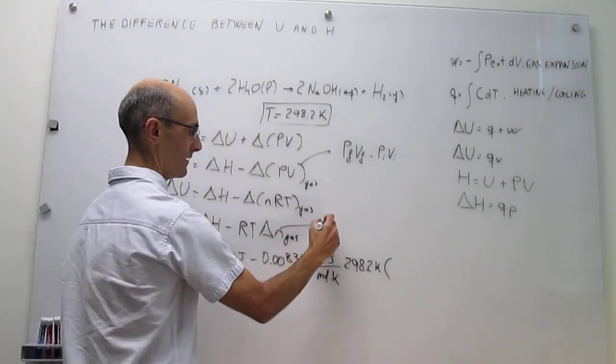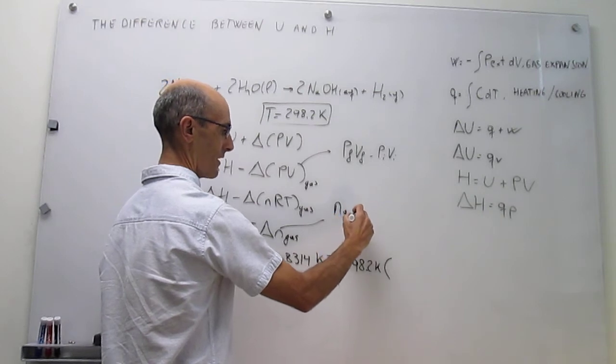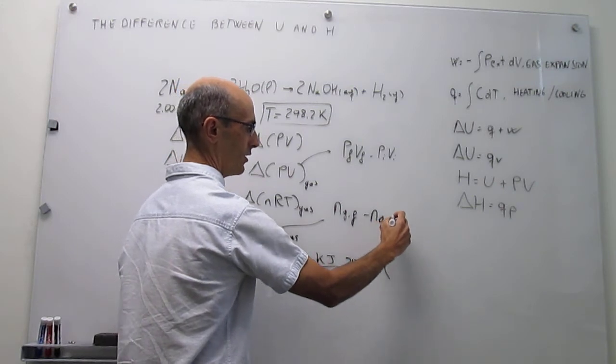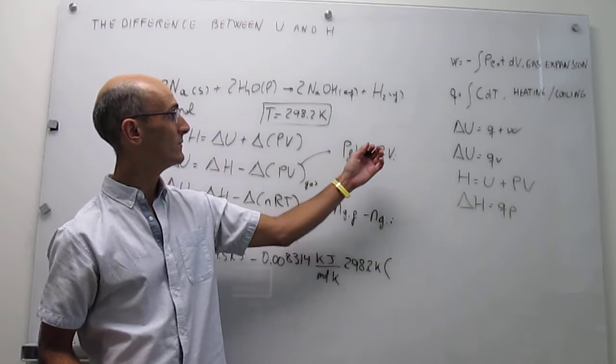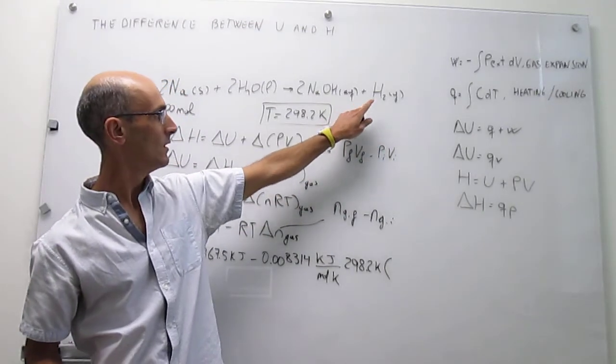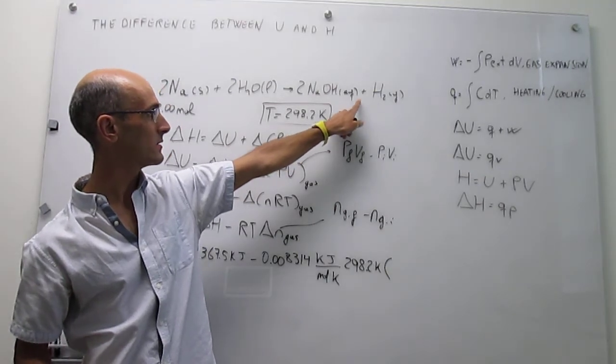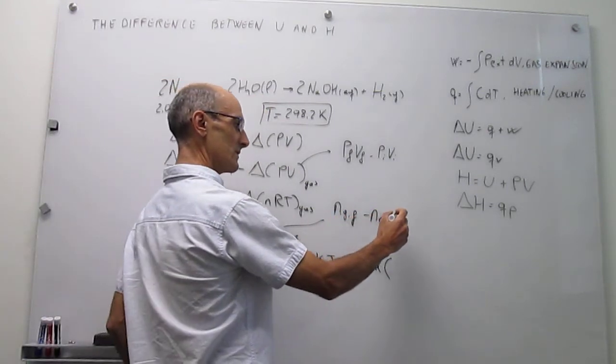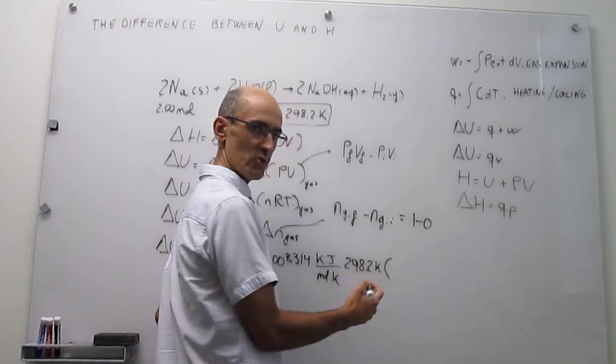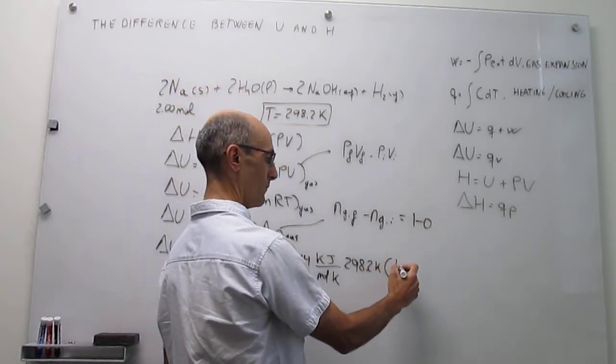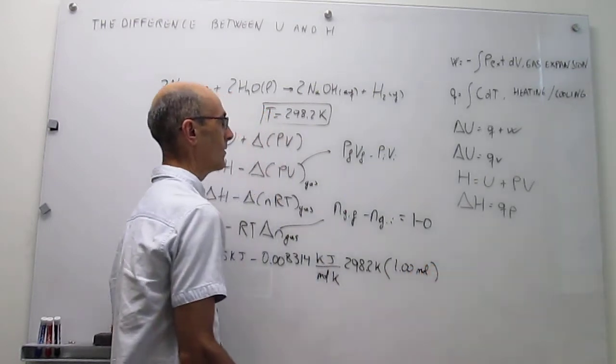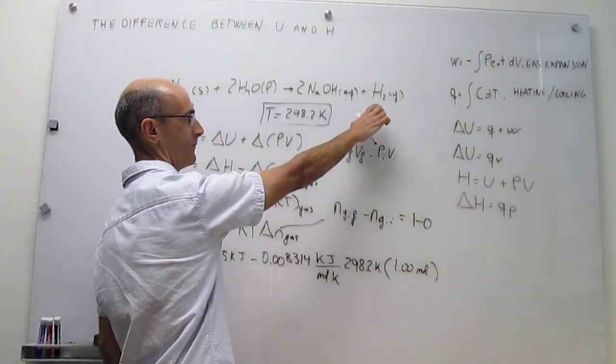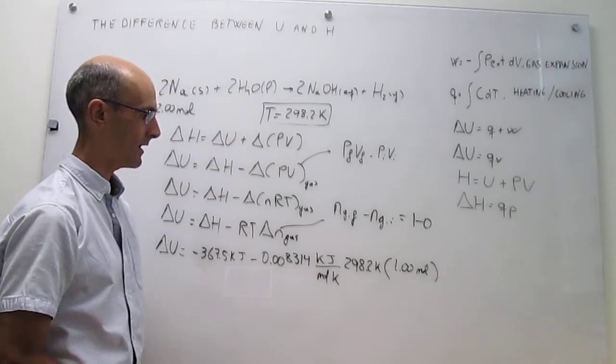Then we have delta N of the gas. This is the number of moles of gas in products, or final, minus the number of moles of gas initially, or in reagents. We come to this reaction and say, how many moles of gas do we have in products? We only have 1 mole of gas in products. And in reagents, we have 0 moles, so this number is actually 1 minus 0 in units of moles. That is simply 1.00 mole. Notice that we are starting this reaction with 2 moles of sodium, so that means the amount of moles in products would be 1 mole of hydrogen gas.